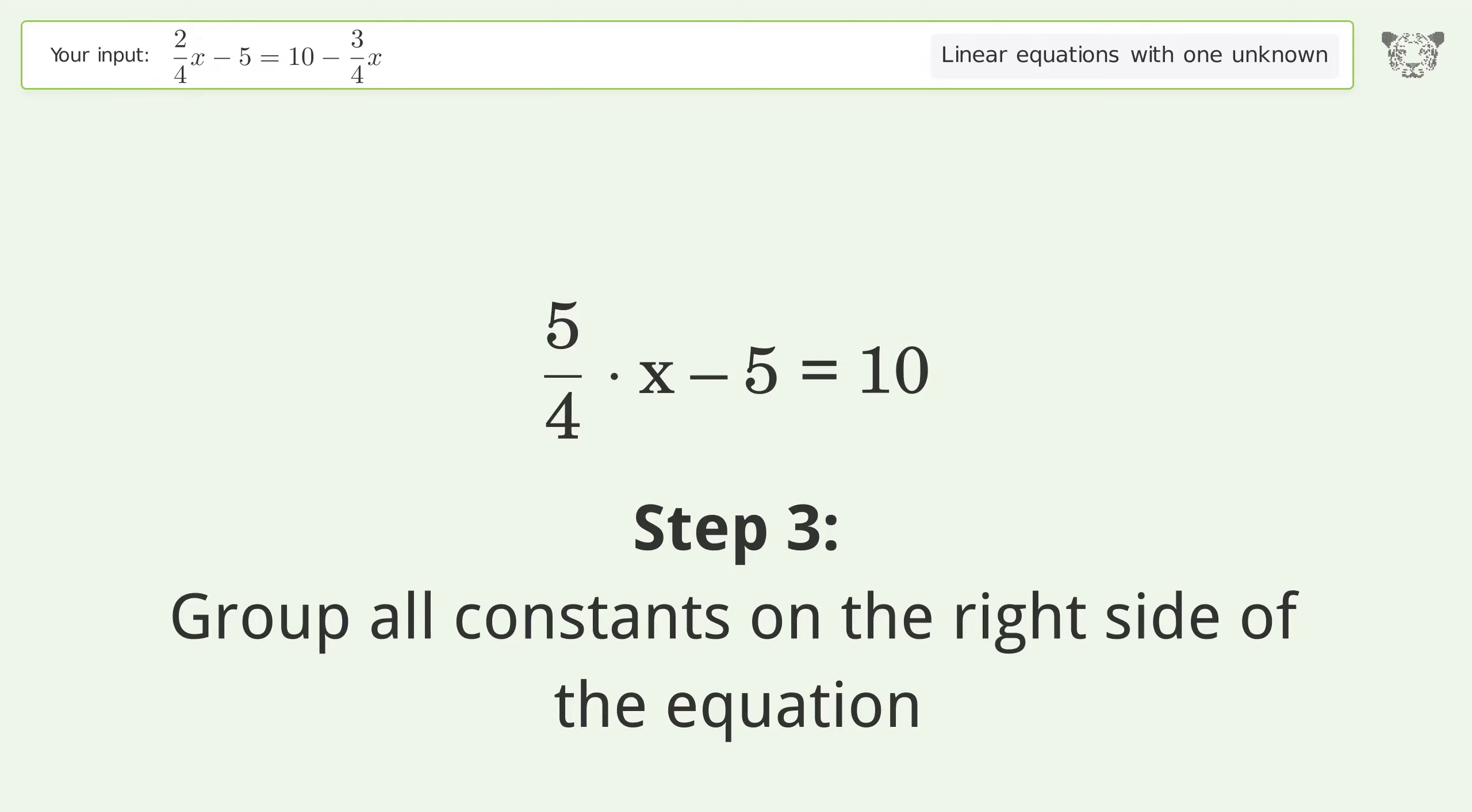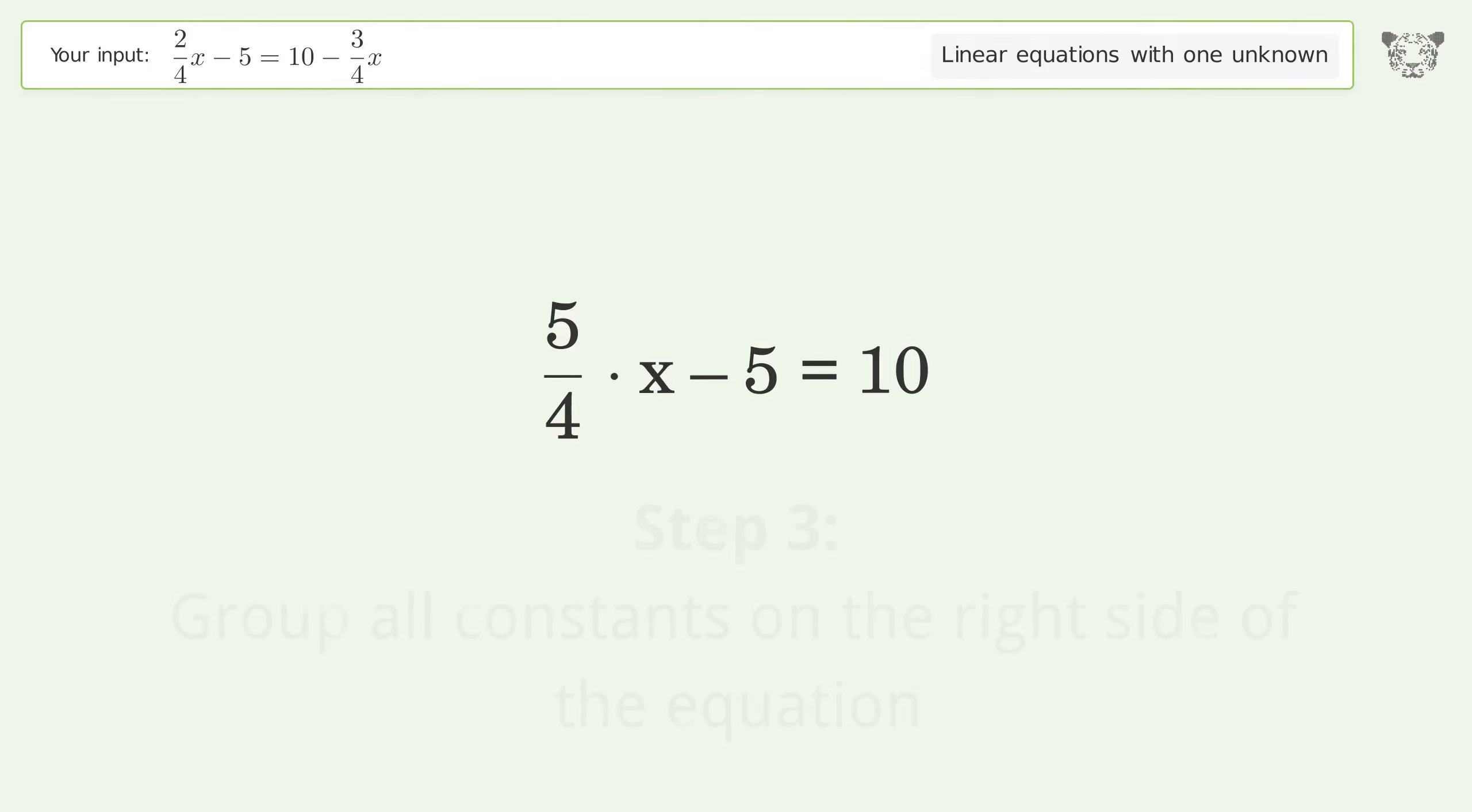Group all constants on the right side of the equation. Add 5 to both sides. Simplify the arithmetic.